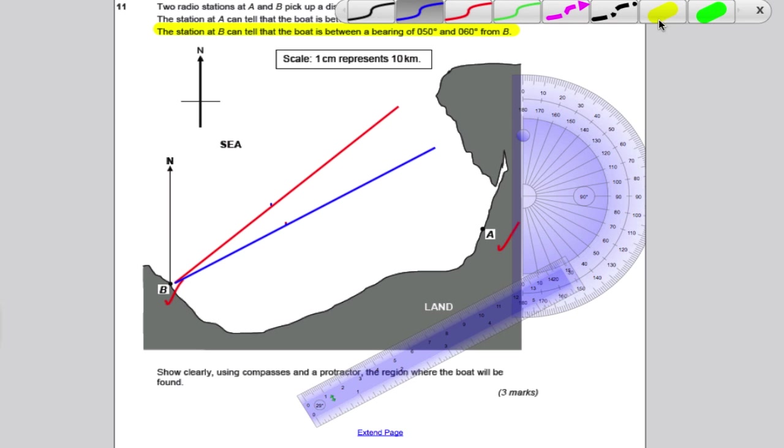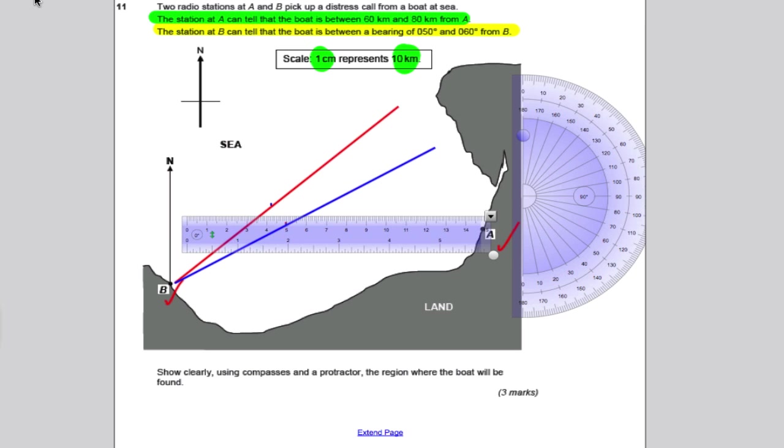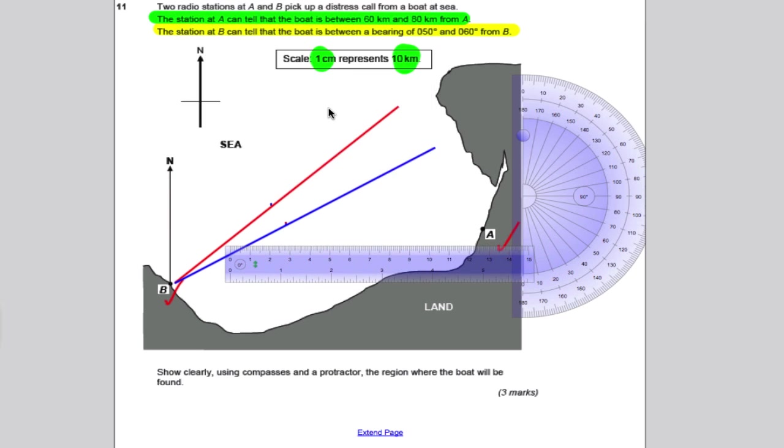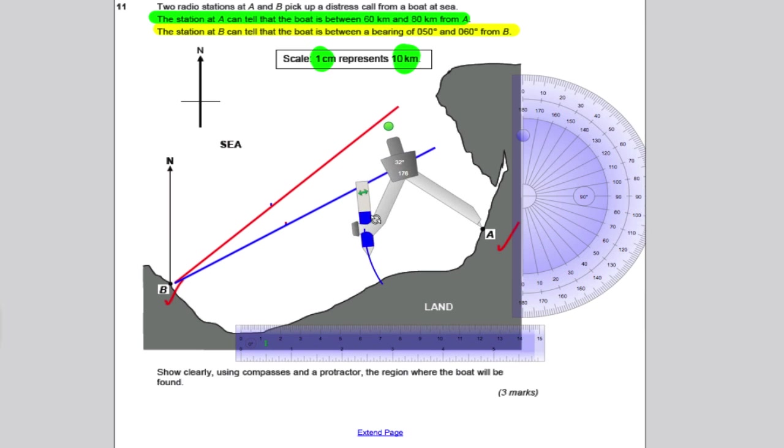Right now, what we want to talk about, we want to talk about what happens at A, or what information station A is getting. We know that from A, the boat is between 60 kilometers and 80 kilometers from A, and 1 centimeter represents 10 kilometers. Now, unfortunately my ruler, my scale may not be exactly the way it was in the exam, because I've shrunk this page down. But let's try anyway. In order to do this, what we need to do, we need to get our pair of compasses out, and we need to measure out 6 centimeters and 8 centimeters, and then do a part of a circle from the point A, as that will show us all the possible distances that are 60 kilometers and 80 kilometers from A. So let's draw this out to 6. There's 6 kilometers. Put your pair of compasses on that point there, and flip it over. And now what we're going to do is we're going to draw a line in, and all of this is what could be 60 kilometers. And all of that could be 60 kilometers.